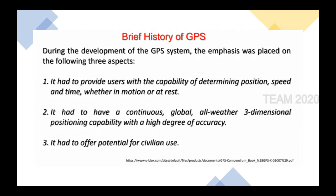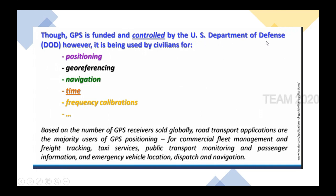Though GPS is funded and controlled by the US Department of Defense, it is being used by civilians for different purposes. These include positioning, geo-referencing, navigation, time, frequency, and calibrations. Based on the number of GPS receivers sold globally, road transport applications are the majority users of GPS positioning — including commercial fleet management and freight tracking, taxi services, public transport monitoring and passenger information, emergency vehicle location, dispatch and navigation.